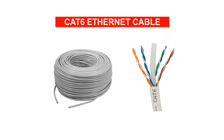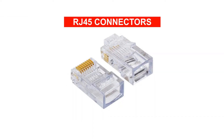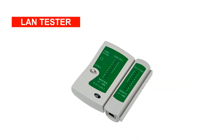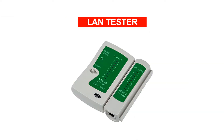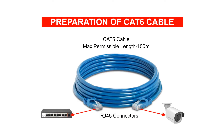Then we have Cat6 network cable and patch cord for making connections, and we also require RJ45 connectors for termination. Tools required are a screwdriver, crimping tool, and LAN tester. Finally, we need a monitor where all cameras will be displayed. Let's start with our connections now.